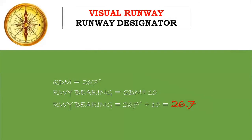Runway designator: 09 means a magnetic bearing of 090 degrees, so the opposite runway designator will be 090 degrees plus 180 degrees, that is 270 degrees, meaning runway 27. Designation markings are numbers and letters that identify a runway. The runway number is determined from the approach direction and is based on the magnetic heading of the runway centerline.